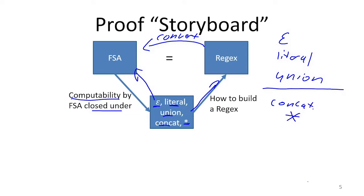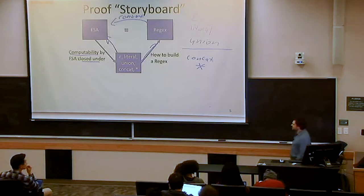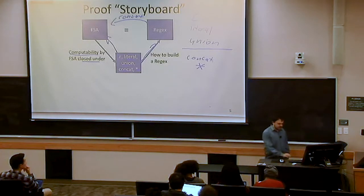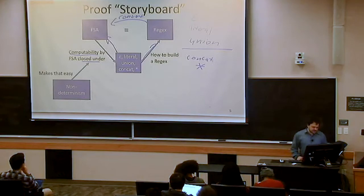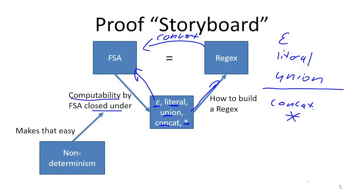We started talking about non-deterministic finite state automata, and the whole idea is that non-determinism is going to make this demonstration of closure much easier. We were able to do the first two without much difficulty staying with deterministic finite state automata, but if we instead use non-deterministic finite state automata, concatenation and Kleene star are going to be massively easier.